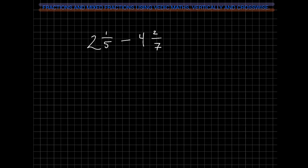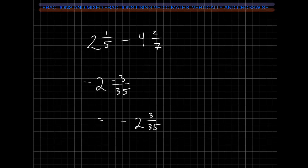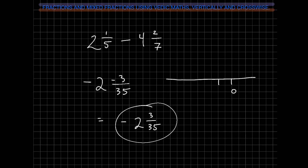Here, 2 minus 4 gives us negative 2. Then vertically and crosswise: 1 times 7 minus 2 times 5. So 7 minus 10 gives us negative 3, and 35 for our denominator. Now both the whole number and the fraction are negative, so the entire thing is negative. Our answer is negative 2 and 3 thirty-fifths. On the number line, our whole number is negative 2 and our fraction is negative 3 thirty-fifths, so the entire fraction is negative.